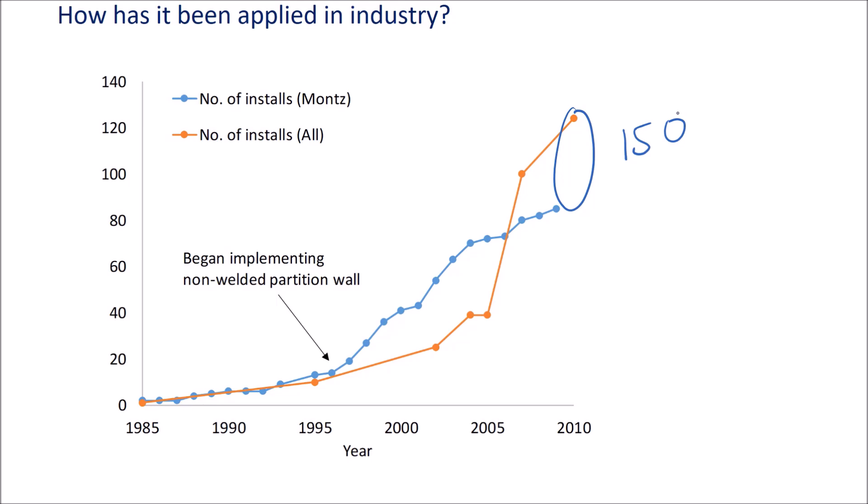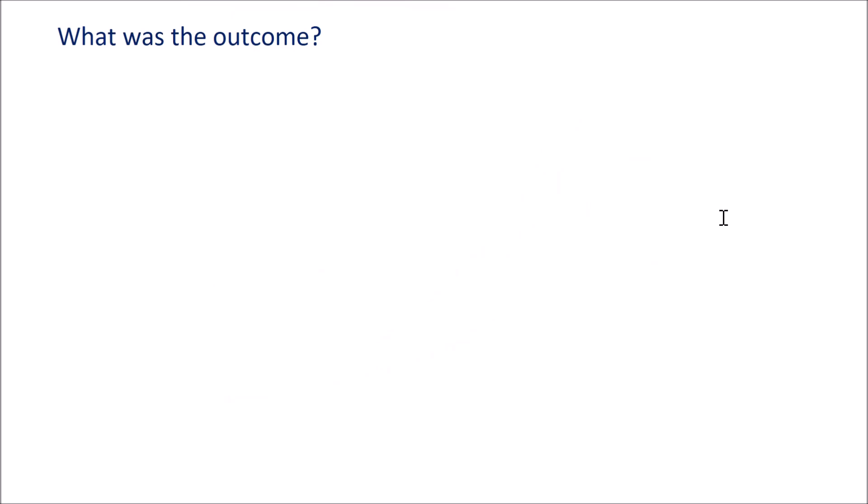Looking out here where we have the most recent data, there were about 150 installations as of 2010. These are from two different data sets. One's a specific installer called Montz, Julius Montz. And then this is data for all installers here from two different sources. So it's been quite heavily used. If you were to extrapolate this data out to today in 2021, you might expect that you'd have over 800 of these columns based on these growth rates.